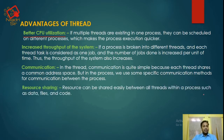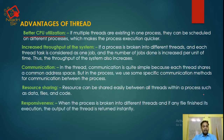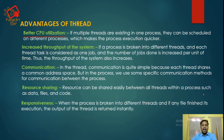Next is resource sharing. Resources can be shared easily between all threads within a process, such as data, files, and code. Next is responsiveness — when a process is broken into different threads and any thread finishes its execution, the output is returned instantly.